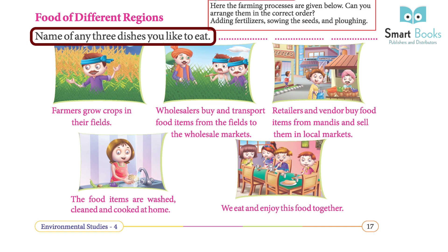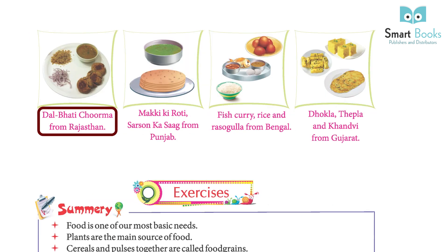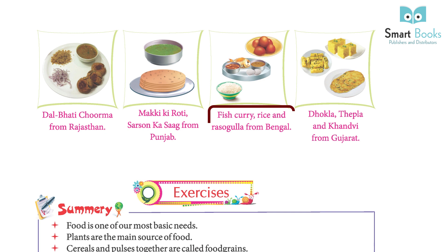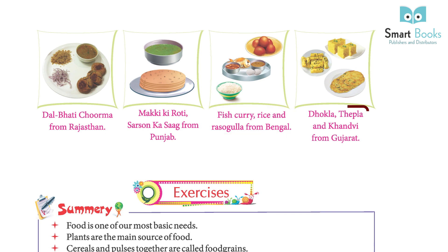Different regions have their own special dishes. Dal bati churma from Rajasthan, makki ki roti and sarson ka saag from Punjab, fish curry, rice, and rasgulla from Bengal, and dhokla, thepla, and khandvi from Gujarat.